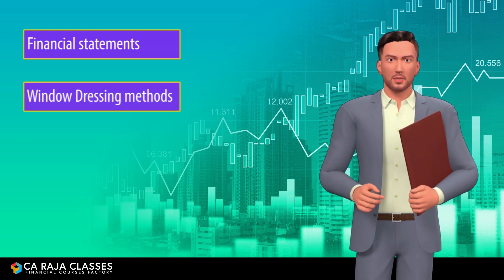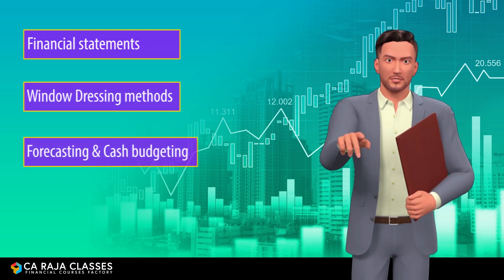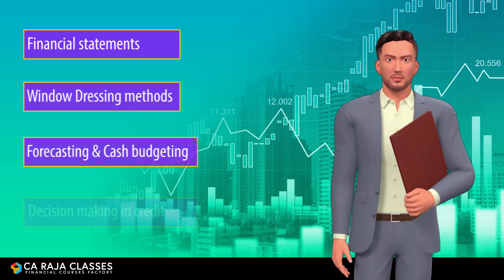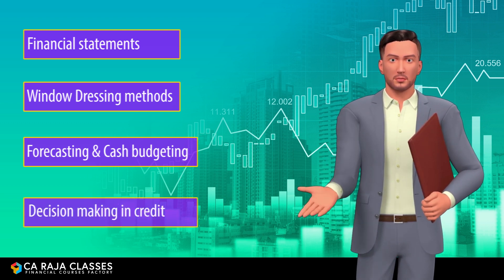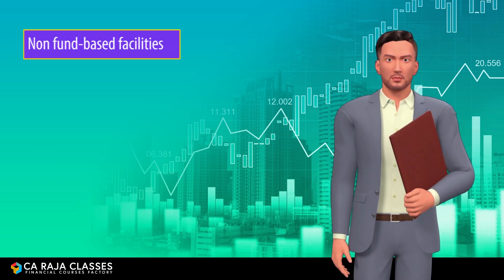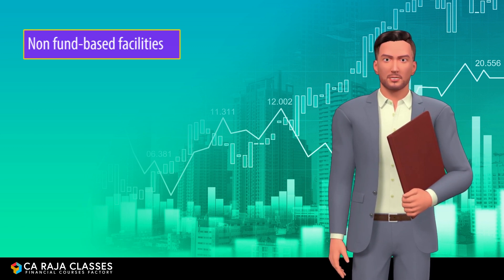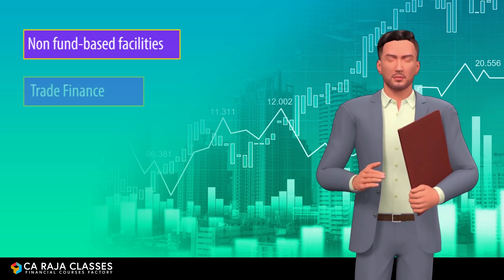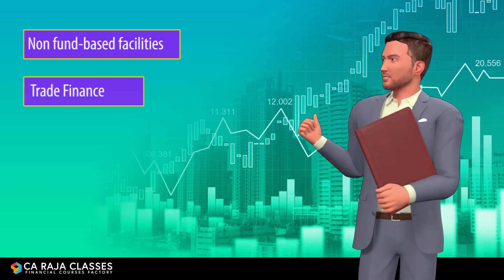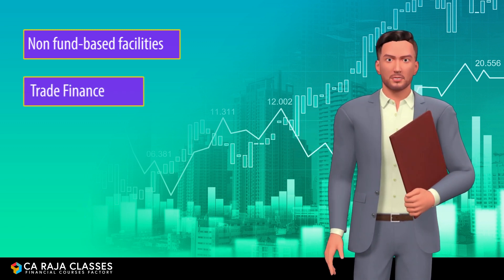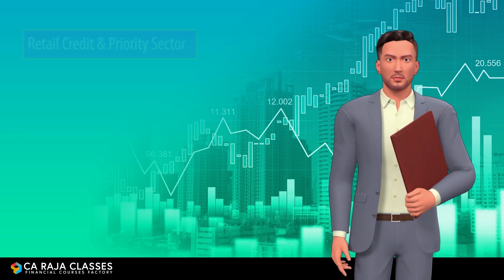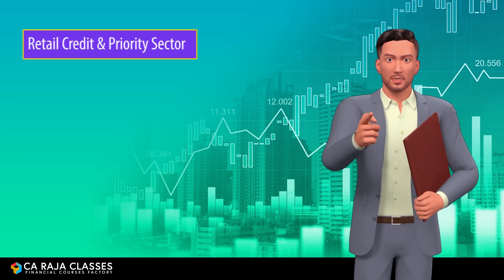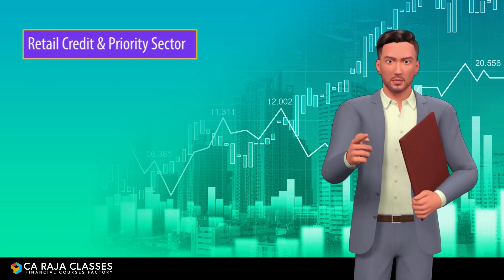Window Dressing Methods Unveiled. Forecasting and Cash Budgeting Illustrated. Decision Making in Credit: Various Dimensions and Step-by-Step Approach with Illustrations. Non-Fund Based Facilities, Letter of Credit, Bank Guarantee and Derivatives, Trade Finance including Bill Finance, Import and Export Finance, Project Finance Appraisal. Standalone Chapters on Retail Credit and Priority Sector Lending.